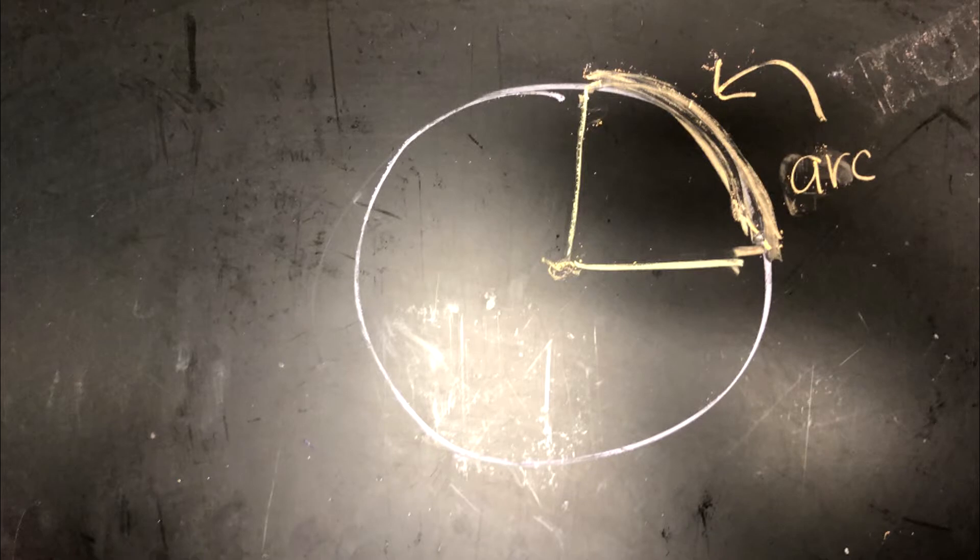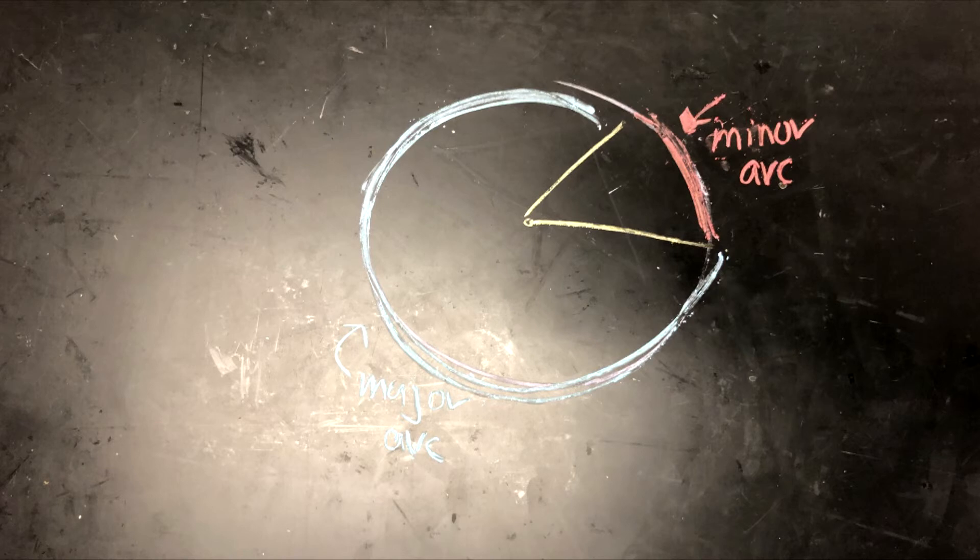An arc is a fraction of the circumference of a circle, measured in degrees. An arc is a minor arc if it measures less than 180 degrees and is caught in a central angle, or an angle with a vertex at the center of a circle.